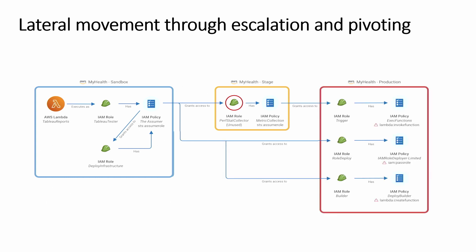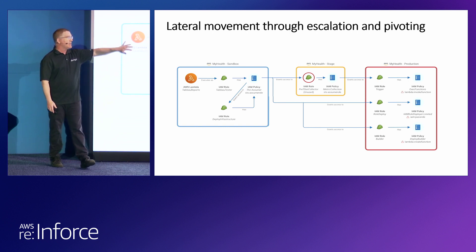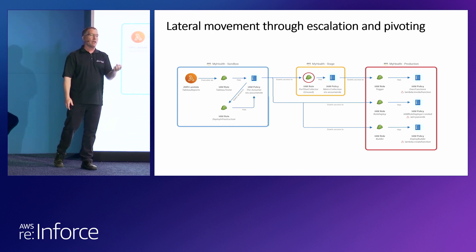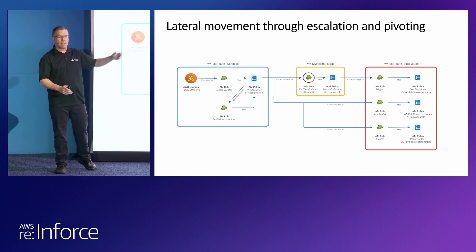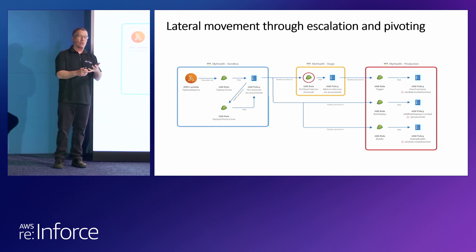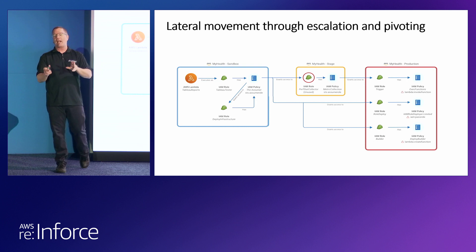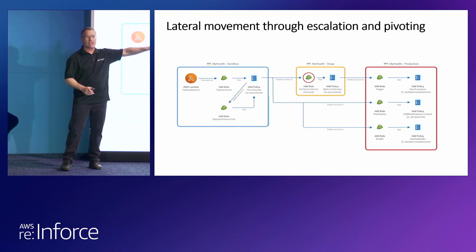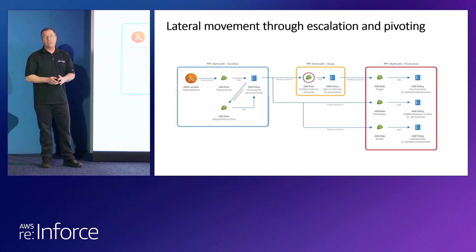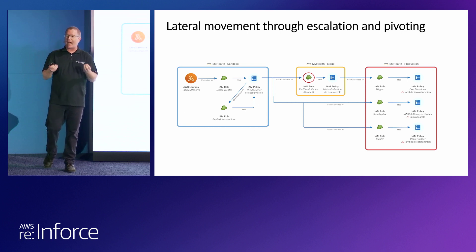Of course, somebody else may be building a workload in another account that uses this account — maybe a development zone and a staging zone where you need to move data back and forth. You create this trust, and you end up with this identity gaining access to another identity through that trust relationship. This exact example is a SANS webinar — you can look it up. It explains how a Lambda function in a Sandbox account ends up with permissions to create a new Lambda function in a production account, execute it, and assign any role that has a trust back to Lambda in that production account.